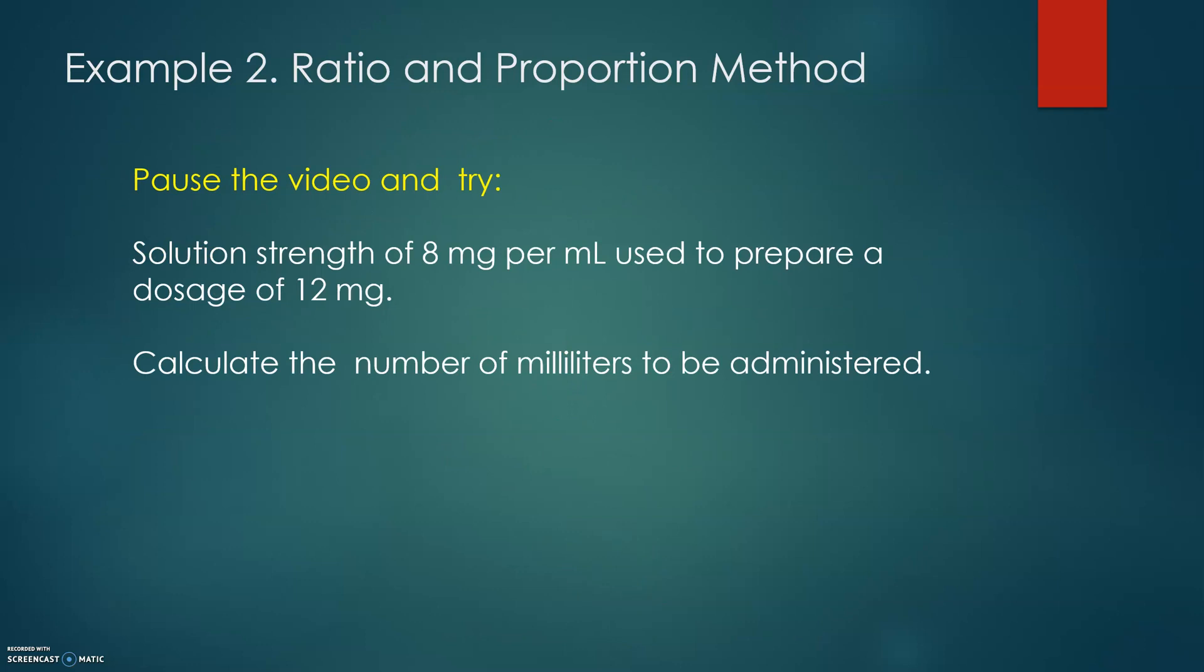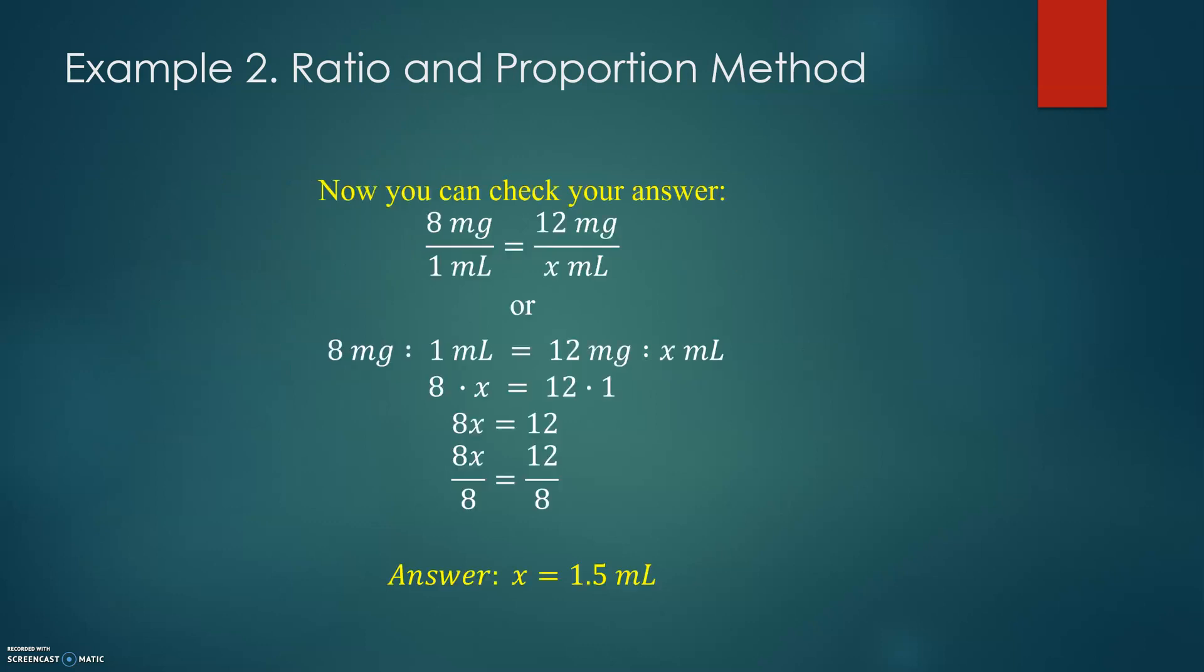Example number 2. I'm offering you to pause the video and try to set up the proportion by yourself. The solution strength is 8 mg per milliliter used to prepare a dosage of 12 mg. Calculate the number of milliliters to be administered. I hope you finished your calculations and you received 1.5 mL as your answer. However, I want to pay attention to whether you set up the proportion well and how did you simplify that.